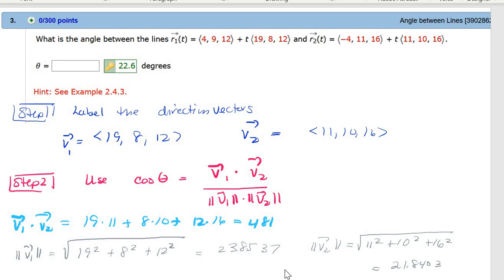And the magnitude of V2 is the same formula, but with the components of V2. And so you get these two numbers, you pop them into the formula. So V1 dot V2 was 481. Magnitude of V1 times magnitude of V2 is this awful number here. And then to find theta, you take the arc cosine or the inverse cosine of that monster right here.